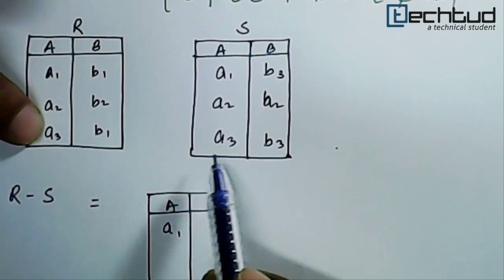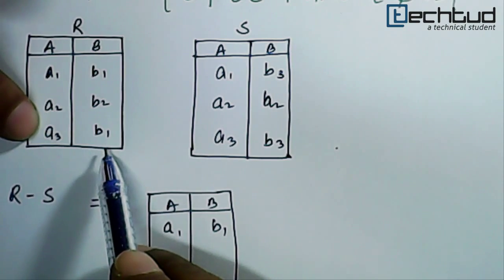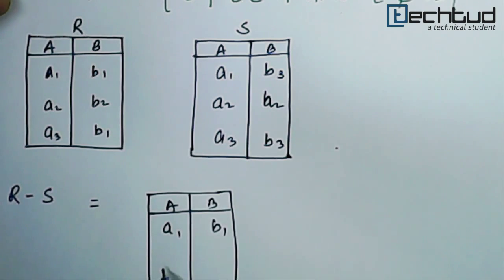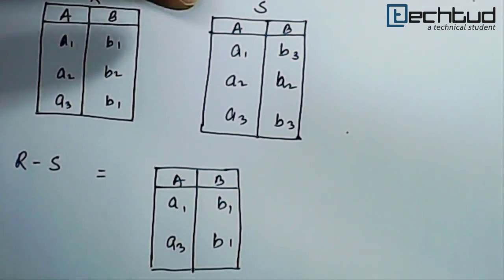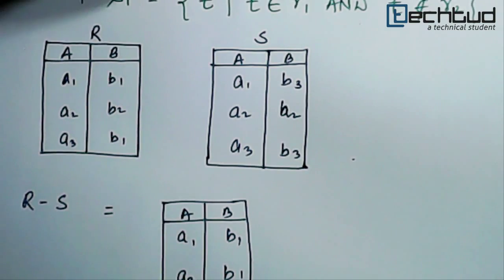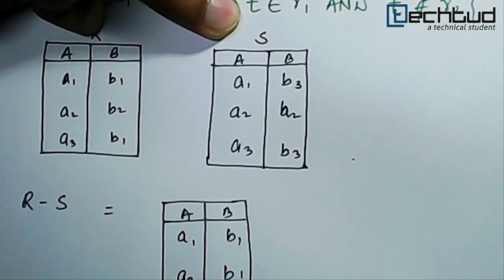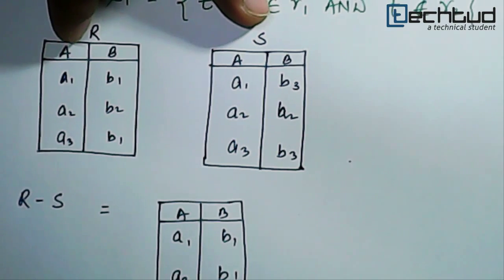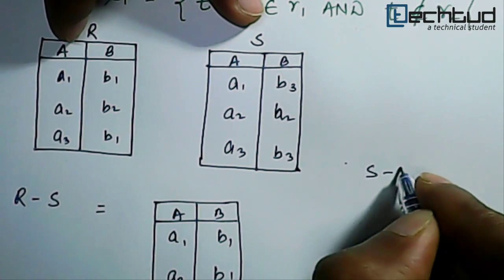Let us say A3 B1. A3 B1 is present here in R but not present in S, so we will have A3 B1. We will check this presence only one way that is present in R but not present in S, not the reverse that is present in S but not present in R. That will be S minus R.